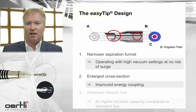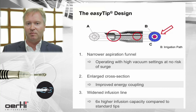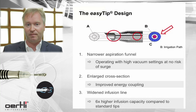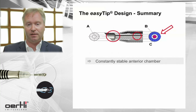The third change is related to the infusion line. Given that the aspiration funnel has been made narrower, there is more space now for the infusion line, giving you a high infusion capacity which is around six-fold higher than compared to standard conventional tips. So you are achieving a constantly stable anterior chamber.